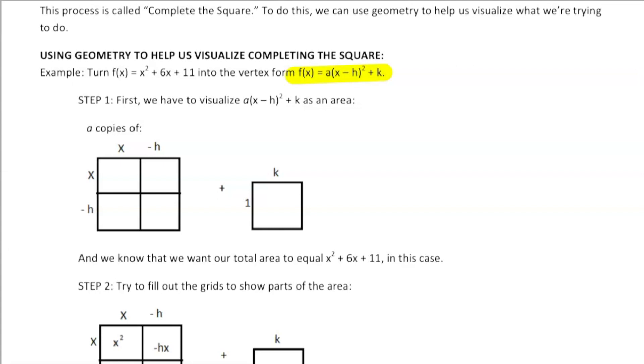When you complete the square, it makes sense to draw a square, and it really helps students to see that visually. If we are completing the square and this is (x - h) squared, we need an actual square plus some constant.